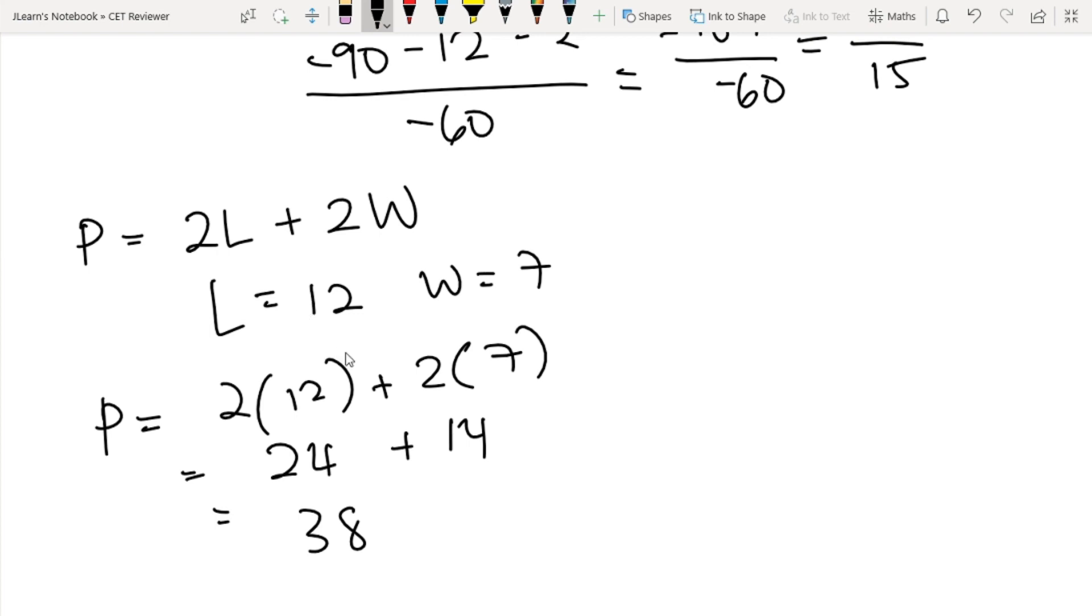This is also useful for other formulas. The area of a trapezoid is equal to (1/2)h(b₁ + b₂) where h is the height, b₁ is base 1, and b₂ is base 2.